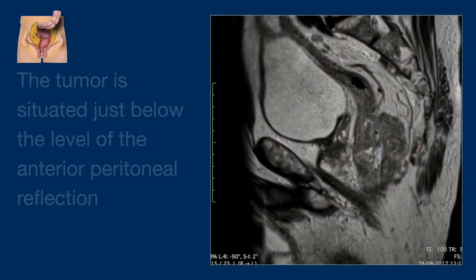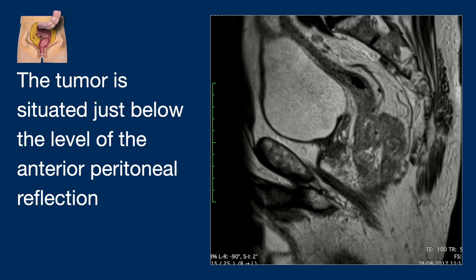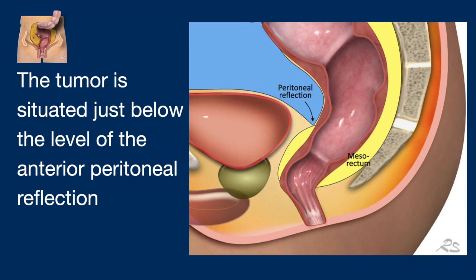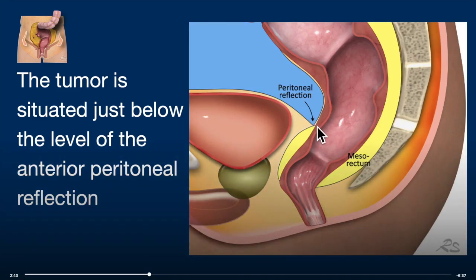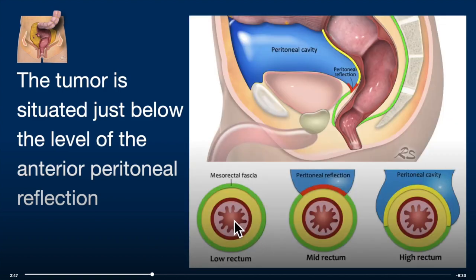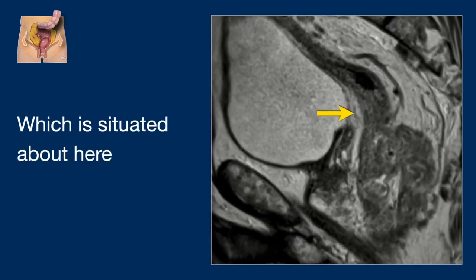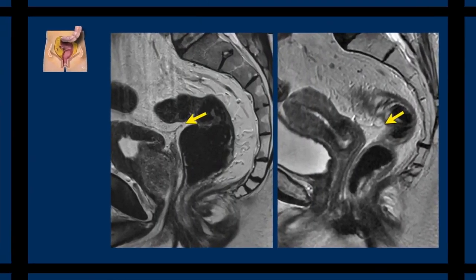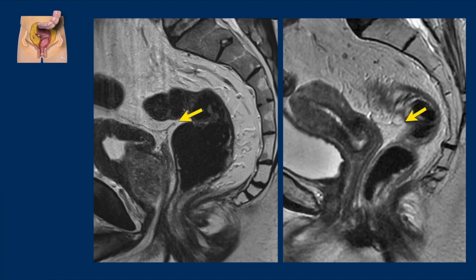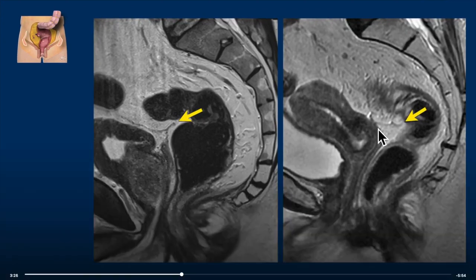The tumor is situated just below the level of the anterior peritoneal reflection, which is a very important landmark. Tumors below the peritoneal reflection can only extend into the mesorectal fascia, while tumors at or above this level can extend into the peritoneal cavity. Let's see if we can find this anterior peritoneal reflection — it can be very difficult to find, but in another patient it is far more easy to see.